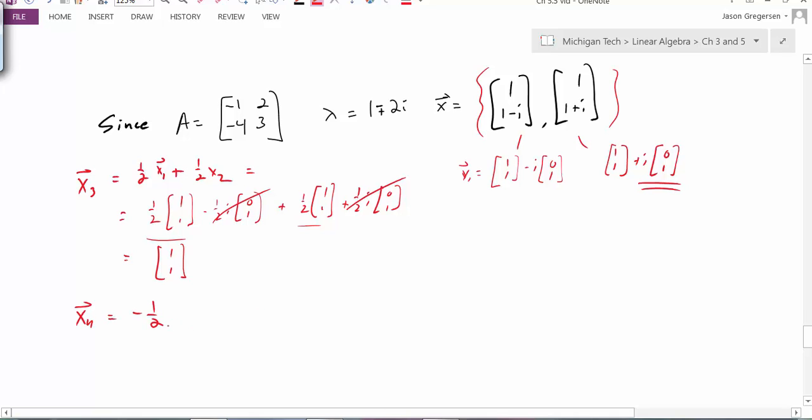Let's create a new vector x4. This vector is going to be negative 1 half times the quantity negative i times x1 plus i times x2. So once again, this is just a linear combination of my eigenvector. When I actually calculate these pieces out,